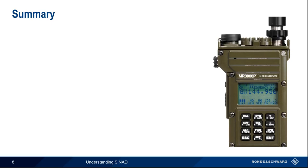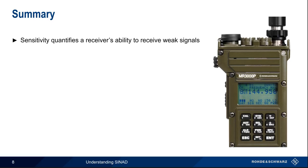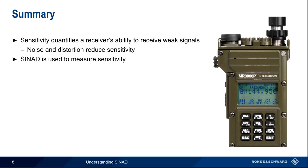So in summary, sensitivity quantifies the receiver's ability to receive weak signals. High sensitivity is usually desirable, because it allows reception of signals that might otherwise not be detected or demodulated. Both noise and distortion reduce the receiver's ability to hear weak signals — that is, they reduce sensitivity. Although there are various ways to define and measure sensitivity, SYNAD is the preferred method for measuring sensitivity in many analog receivers, because it takes into account the effect of both noise and distortion.